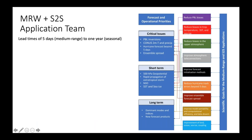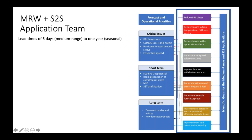The medium range weather and S2S application team represents applications on leads of five days out to a single year, which covers an awful lot of stuff — mostly our global models, the GFS and the GEFS, which covers a lot of different topics. We've come up with a list of operational and forecast priorities as well as science goals. A major activity of this application team is to be able to link these two together. We have forecast and operational priorities given as critical issues, short-term priorities, long-term priorities, and a list of scientific goals.